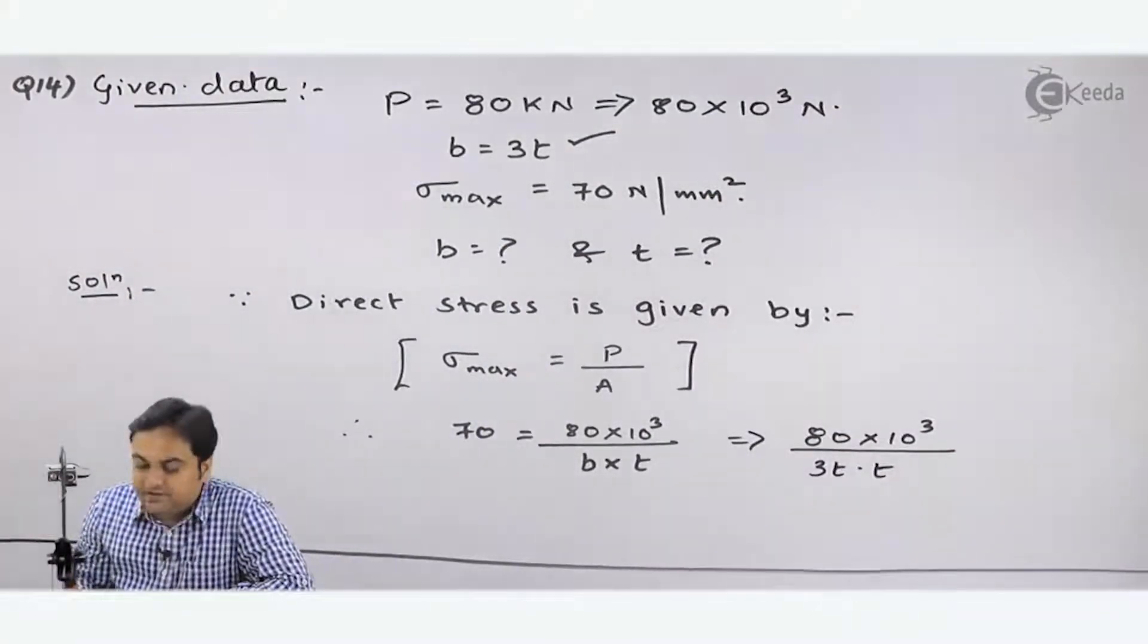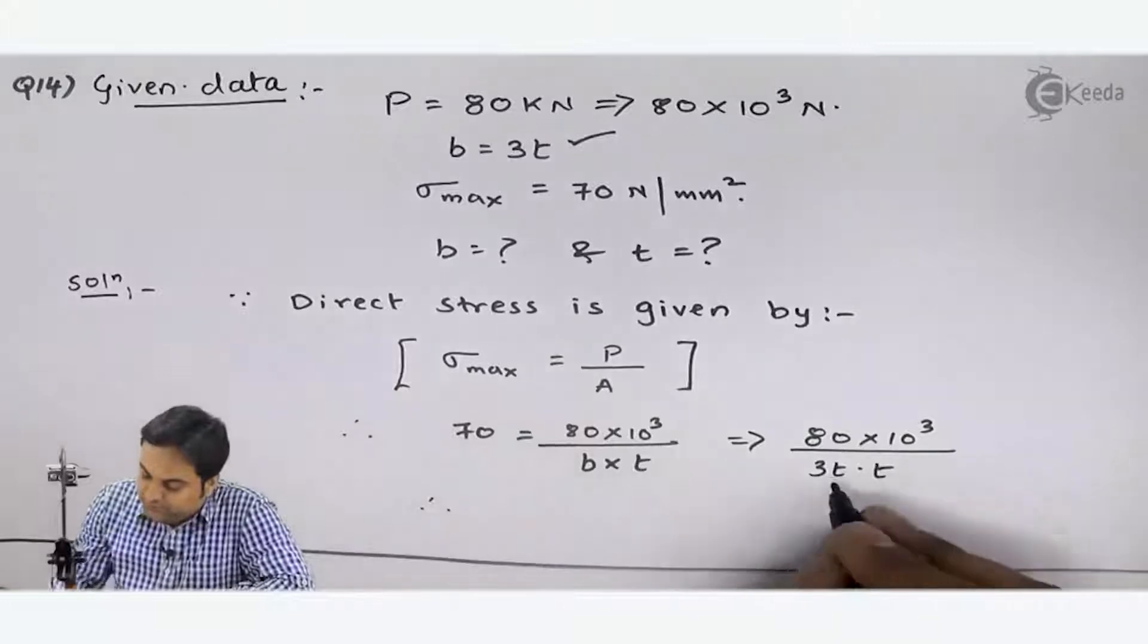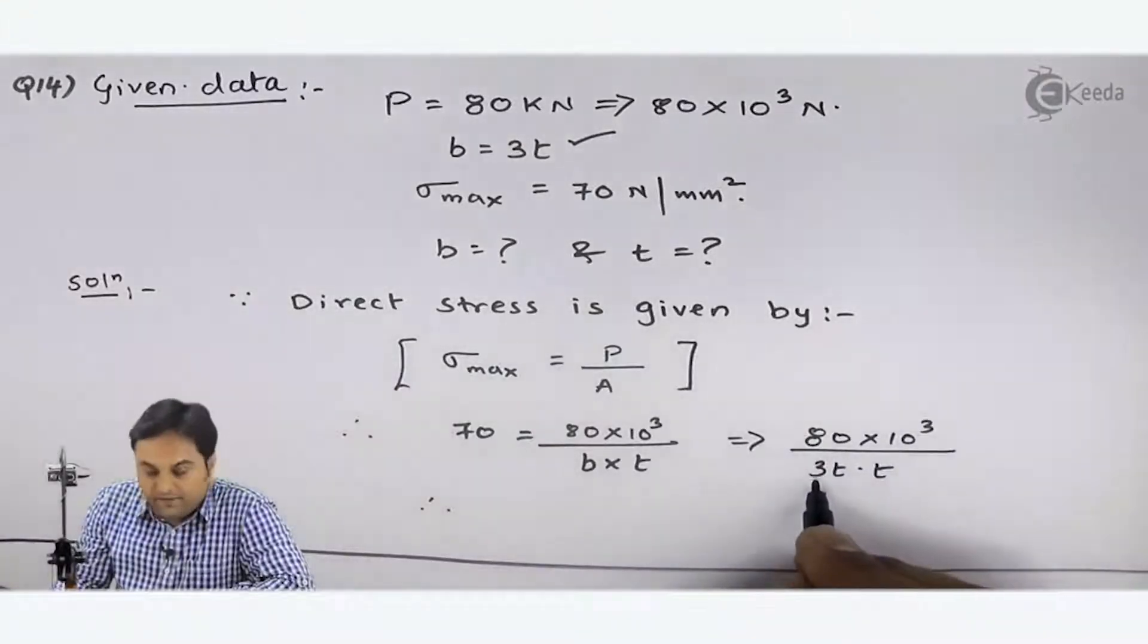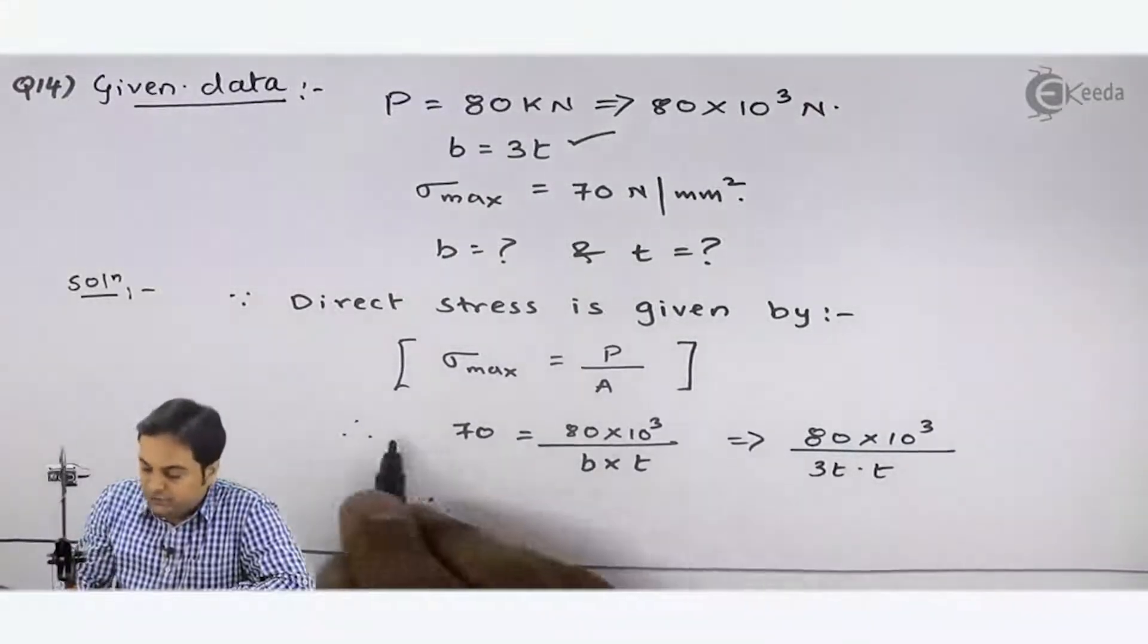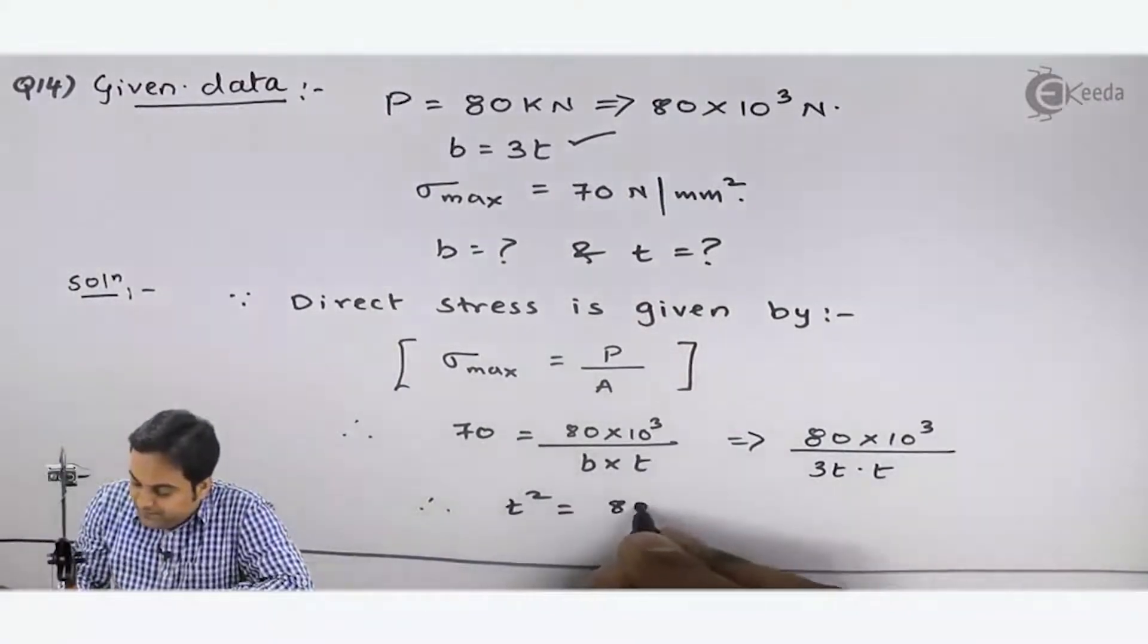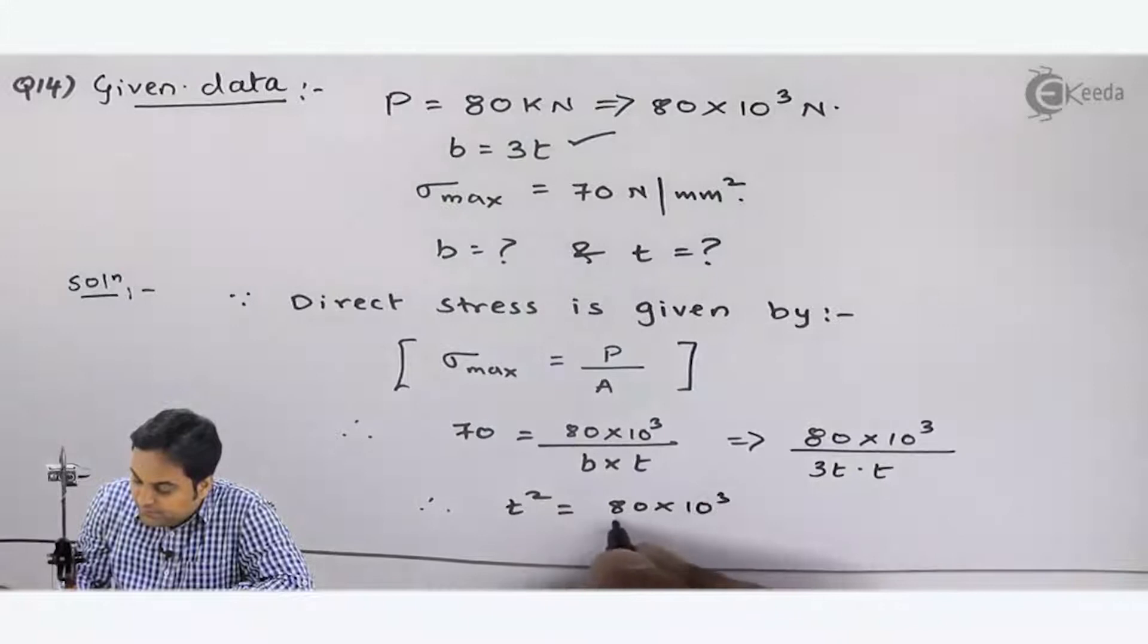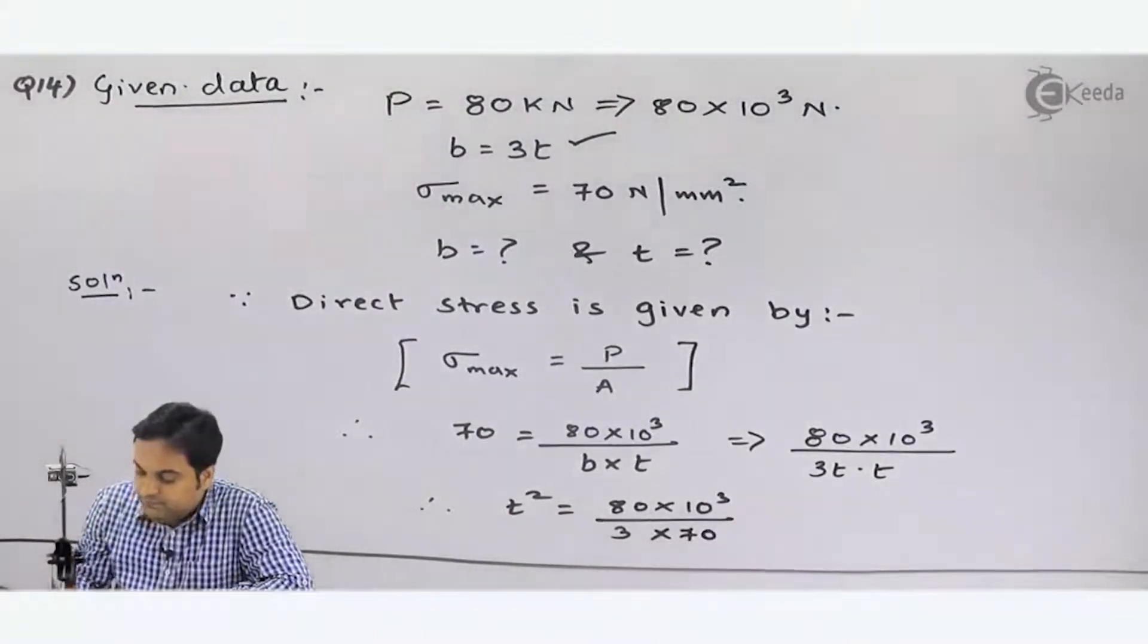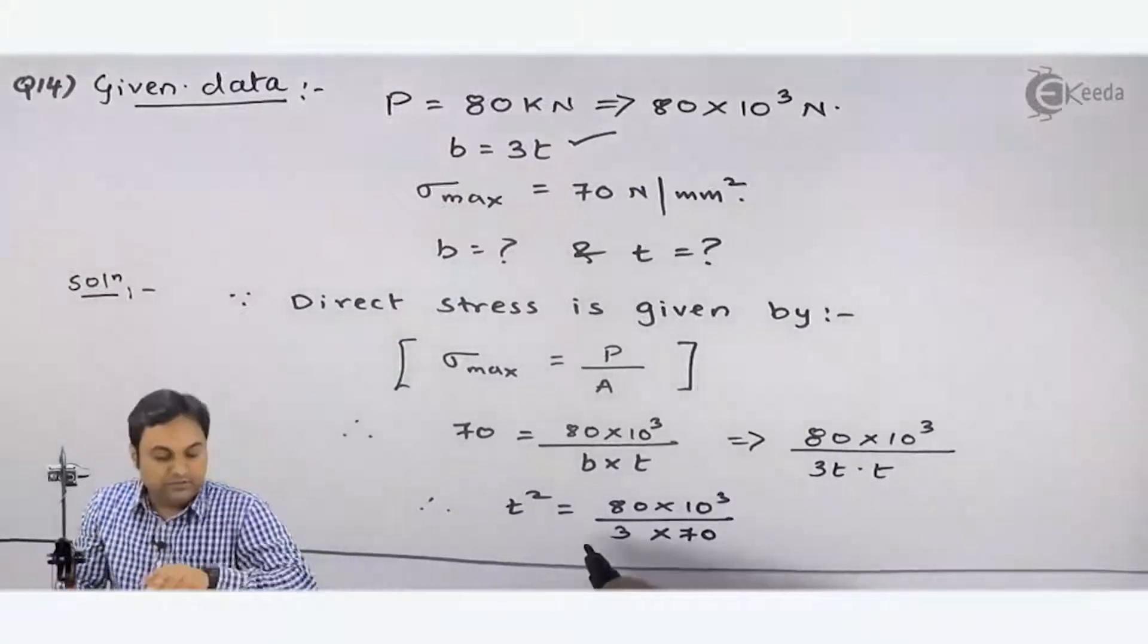When I calculate the whole term, I will get 80 × 10³ divided by 3 × 70.